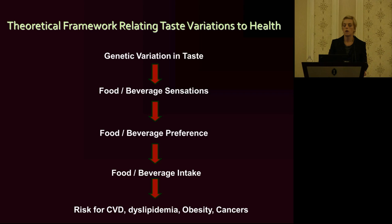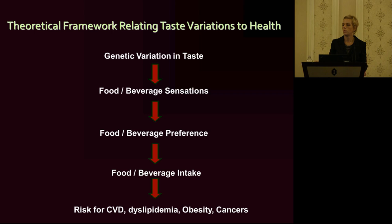We think there's a relationship between our ability to taste foods and beverages and our preference for them. But you probably know people who really like foods because they're very bitter, or very spicy — so the relationship is not one-to-one. We tend to eat foods that we like, which might be true in children, but in adults we eat foods for all kinds of reasons, including the non-homeostatic reasons mentioned in Steve Wood's talk this morning. And there's a relationship between what we eat and our risk for certain diseases — again, not one-to-one.